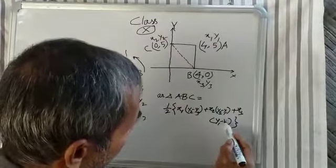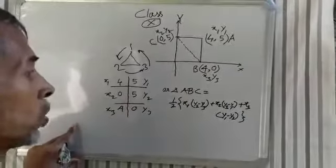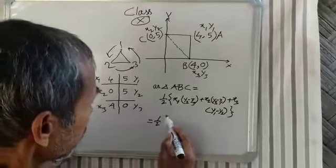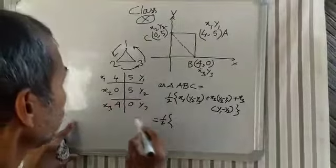This equals half into: x1 is 4, x2 is 0, x3 is 4.